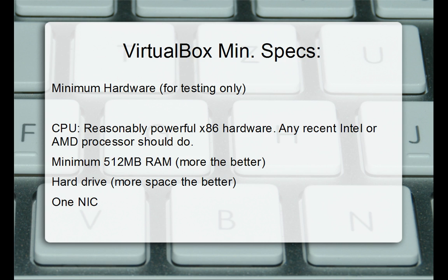For VirtualBox, any reasonably powerful x86 hardware — any recent Intel or AMD processor — will do. 64-bit is better, but 32-bit works fine. They say a minimum of 512 MB of RAM, but we all know Windows XP Service Pack 3 takes at least one gig to run semi-normally. If you have Windows 7 as your host OS, it takes about two gigs just to run normally, so you'll want much more. Hard drive: more space is better, and one network card.